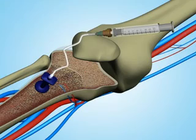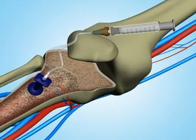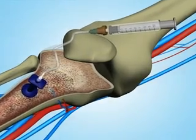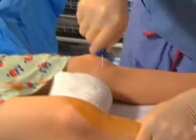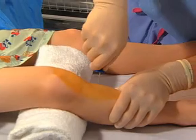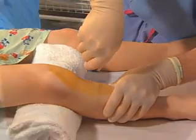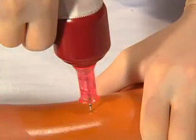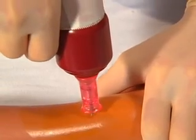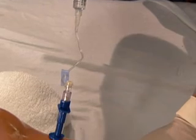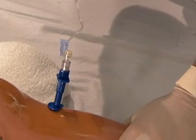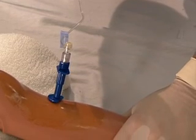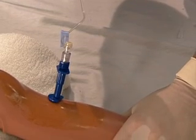Appropriate placement of an intraosseous catheter is a reliable means of obtaining urgent vascular access in children, with low rates of reported complications. Both manual and power-assisted placement techniques can be used to deliver fluids and medications rapidly during pediatric resuscitation.